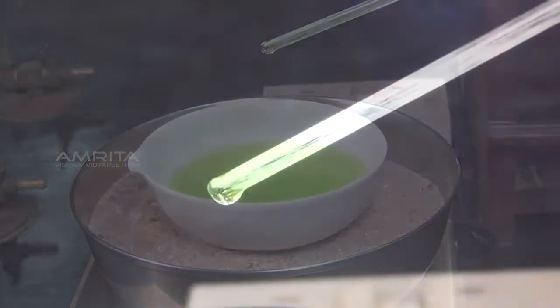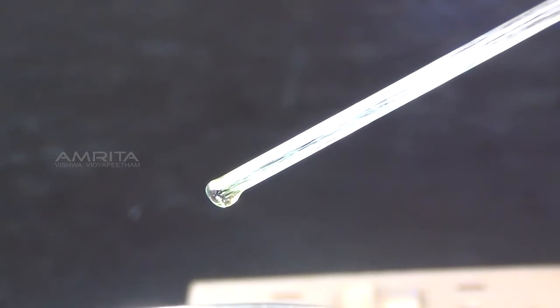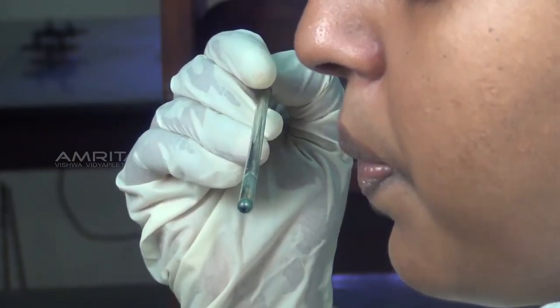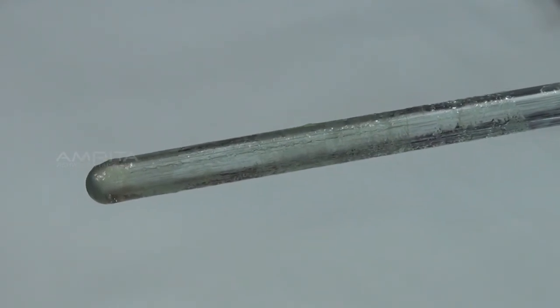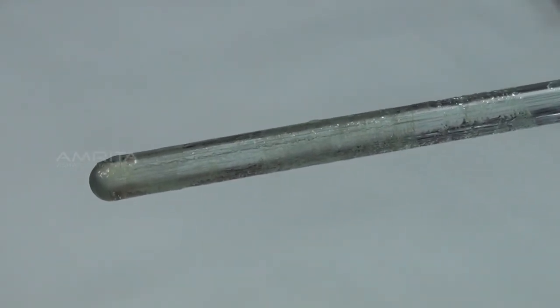Take out a drop of the concentrated solution at the end of the glass rod and cool it by blowing. Formation of thin crust indicates that crystallization point has been reached.